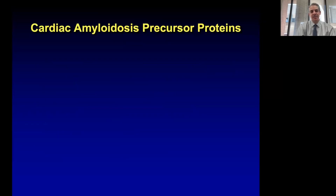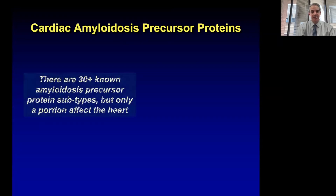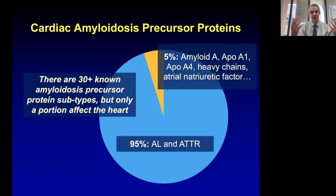Before we get into type-specific testing, it's really important to recognize that amyloidosis is caused by a number of precursor proteins. We think there are at least 36 known precursor protein types that can cause amyloidosis, but only about 11 of these protein types might affect the heart. The overwhelming majority — approximately 95% or more — of all cases of cardiac amyloidosis boil down to two causes: AL amyloidosis or ATTR amyloidosis, with the remaining 5% or fewer caused by very rare types.